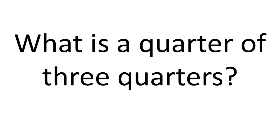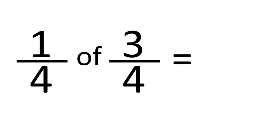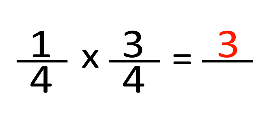Another little thing worth reminding kids is that you can replace the word 'of' with the multiplication sign. A question written out in words like 'what is a quarter of 3 quarters' can appear confusing, until you realise it can be written as a quarter times 3 quarters. So 1 times 3 is 3, 4 times 4 is 16 — a quarter of 3 quarters is 3 sixteenths.